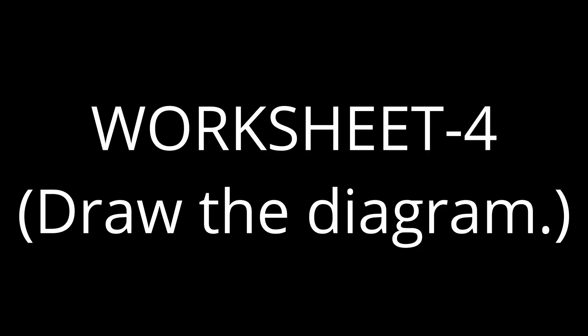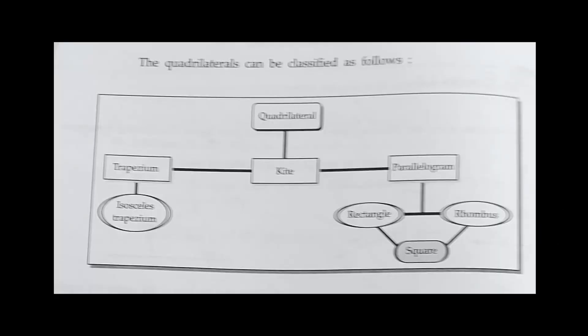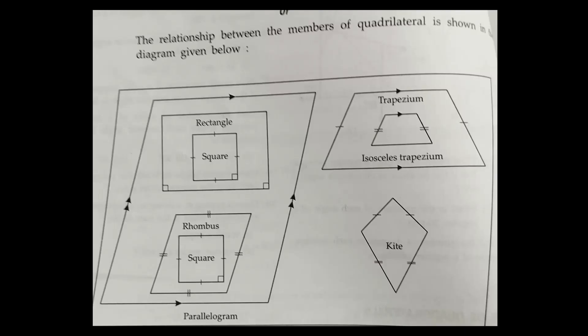Worksheet 4: Quadrilaterals can be classified as follows. The relationship between the members of quadrilaterals is shown in the diagram.